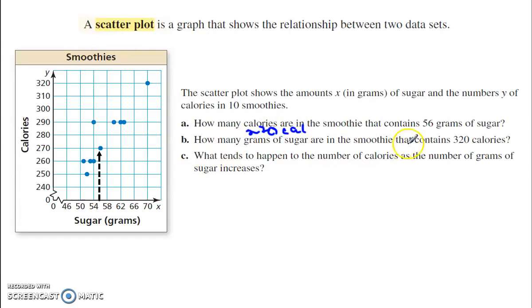How many grams of sugar are in the smoothie that contains 320 calories? Alright, so now we're going up calories, and we're going to read here 320. Yep, that's this one right there. That point, that is 70 grams of sugar. So, 70 grams.